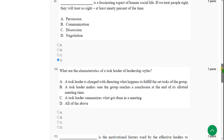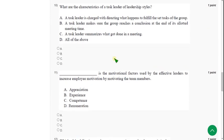Moving on to the tenth question. What are the characteristics of a task leader of a relationship styles? So for tenth question, the answer is All the above. So mark option D.